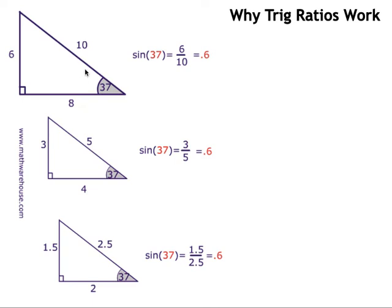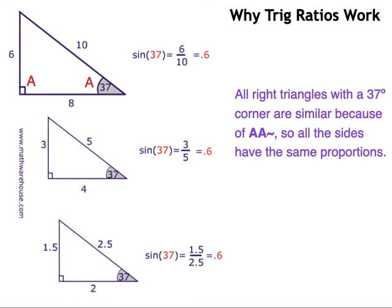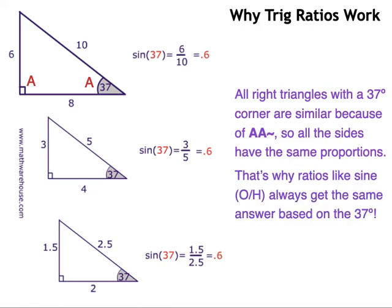The reason why all three triangles get the same answer for sine of 37 is this. If you look at all three triangles, they have two pairs of matching angles in common. The 37-degree angle and the right angle matches on each one. And that should sound kind of familiar, that two-angle matching pattern on different sized triangles, because that should remind you of chapter 7, the similarity chapter. Remember that AA similarity postulate? The AA similarity postulate tells you that all these triangles are similar to each other. They're the same shape, just different sizes. So write this down: All right triangles with a 37-degree corner are similar to each other because of AA similarity postulate. Therefore, all the sides have the matching proportions. That's why the 6 over 10 got the same answer as the 3 over 5 and the 1.5 over 2.5. They're the same shape triangles, so they have proportional sides.